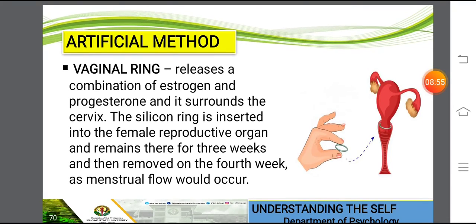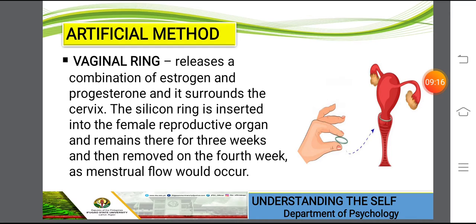Another method is the vaginal ring. It releases a combination of estrogen and progesterone and it surrounds the cervix. The silicone ring is inserted into the female reproductive organ and remains there for three weeks, then removed on the fourth week as menstrual flow would occur. This is a decision that depends on the woman's preference.